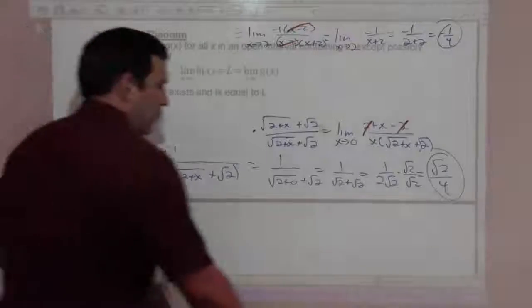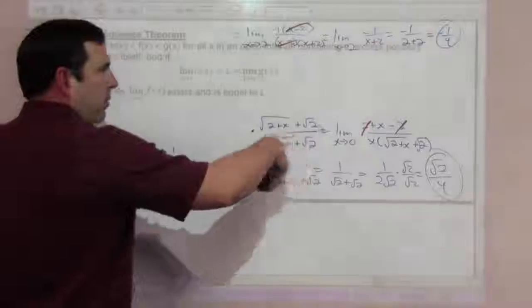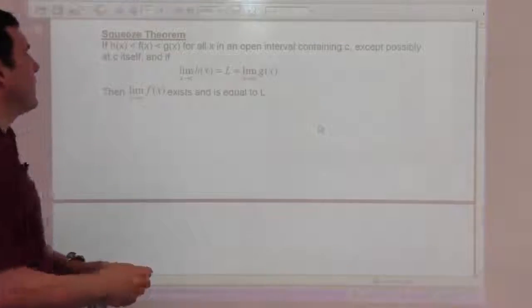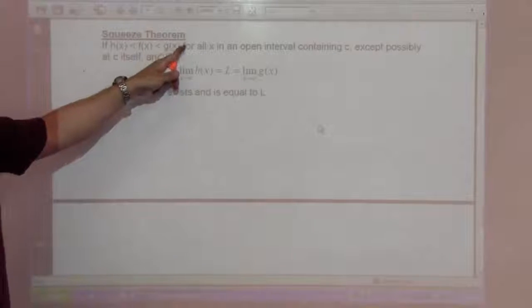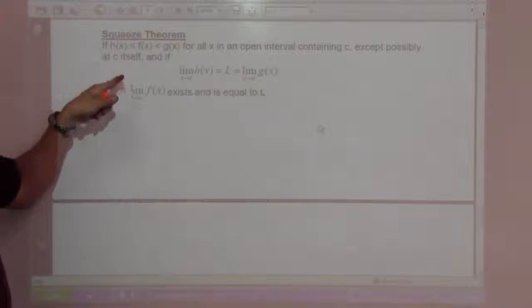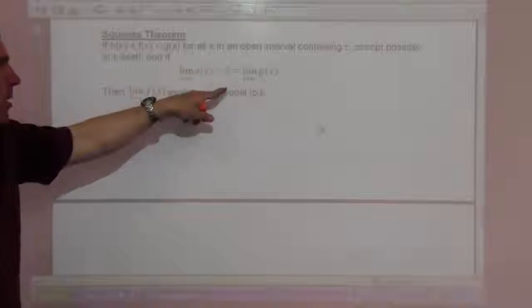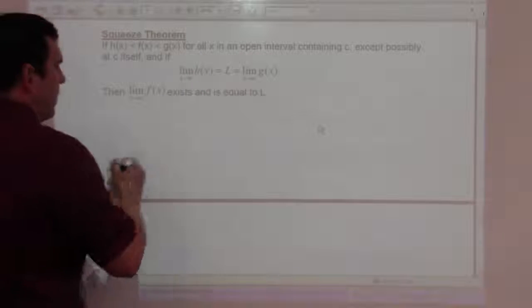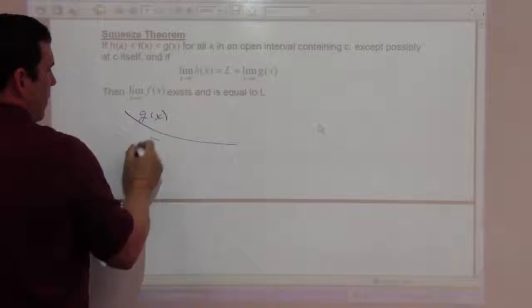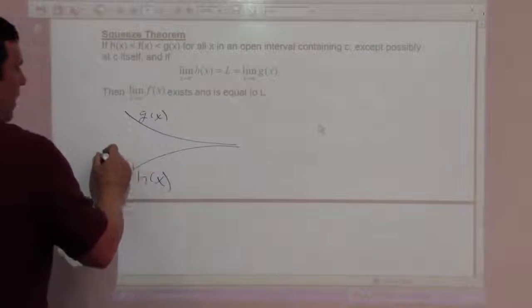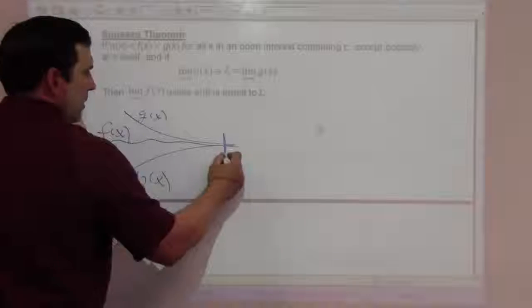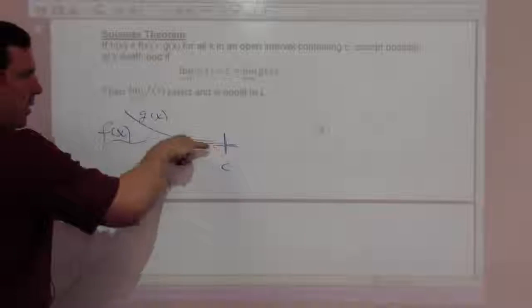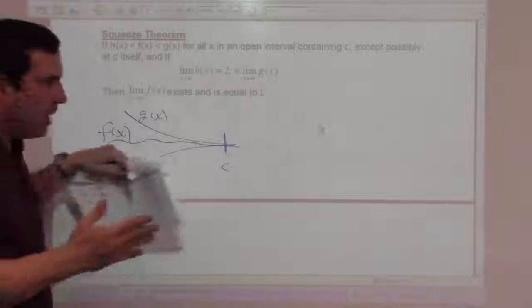The squeeze theorem: if h of x is less than f of x less than g of x for all x in an open interval containing c, and the limit as x goes to c of h of x equals L and the limit of g of x also equals L, then f of x has the same limit L. Visually, if g is always bigger and h is always smaller, and both approach the same point, f is squeezed into that same limit.